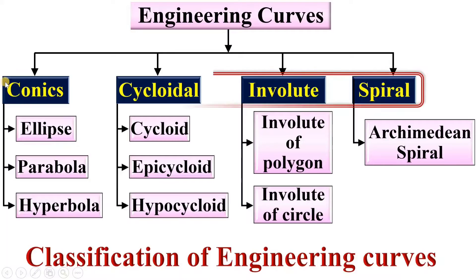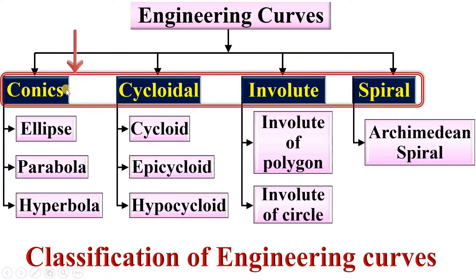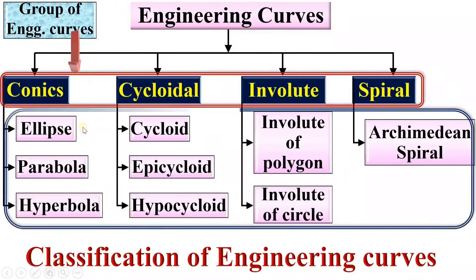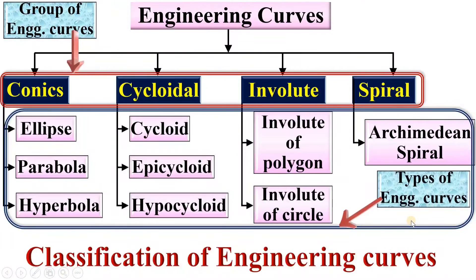Now, an important point: conics, cycloidal, involute, and spiral are the names of the different groups of engineering curves — they are not actually the names of the engineering curves themselves. We can say these are the groups of engineering curves, whereas ellipse, parabola, hyperbola, etc. are called the individual engineering curves. Now let us see all these engineering curves one by one briefly.